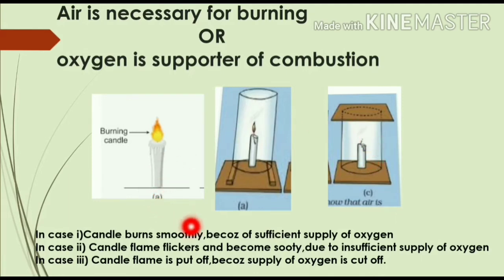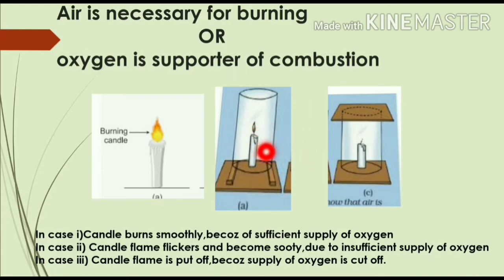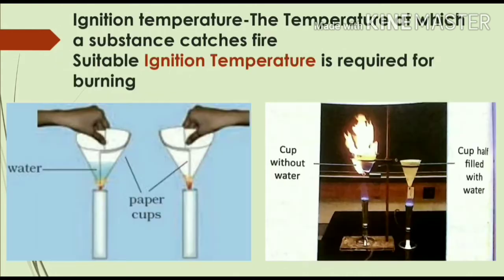In the first case, the candle burned smoothly because there was a sufficient supply of oxygen. In the second case, air supply was partially restricted. In the third case, when we placed the cardboard over the flame, it went off because the supply of oxygen was completely cut off. This activity proves that oxygen is the most necessary condition for burning, and oxygen is known as the supporter of combustion.